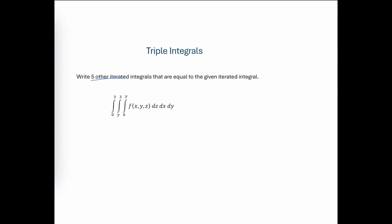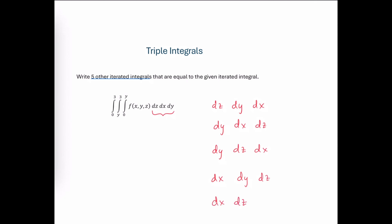Given the triple integral, we're asked to find five other iterated integrals that are going to yield the same result. Basically this means we're going to rewrite the order of integration. Right now we have dz dx dy, but we can change that order to dz dy dx, or starting with dy then dx dz, dy dz dx, or starting with dx: dy dz dx, and dx dz dy. These other five orders are what we are interested in finding.